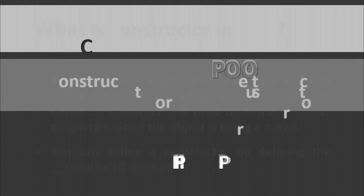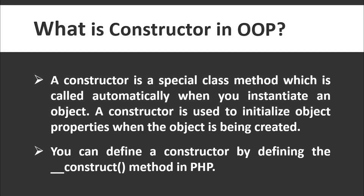A constructor is a special class method which is called automatically when you instantiate an object. A constructor is used to initialize object properties when the object is being created. You can define a constructor by defining the __construct method in PHP.